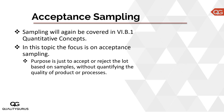Now coming to acceptance sampling. The focus of acceptance sampling is to accept or reject a lot based on samples, without quantifying the quality of the product or processes. So we have a lot, we take a sample from it, we test that sample, and based on that sample we decide whether to accept or reject the lot.